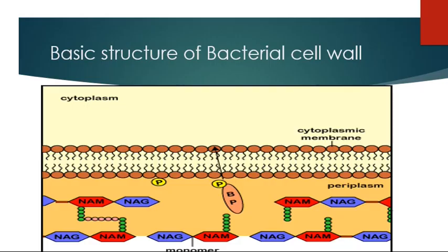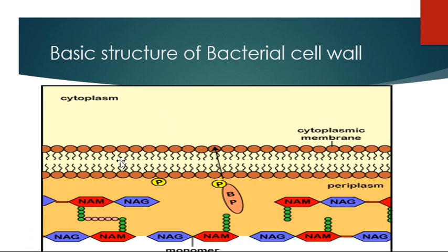Now I will talk about the basic structure of the bacterial cell wall, starting from the inside. Inside is the cytoplasm, then there is a bilipid membrane we call phospholipid, then there is peptidoglycan. The inner part contains cytoplasm with ribosomes and DNA, this is the bilipid phospholipid layer, and this is the peptidoglycan.